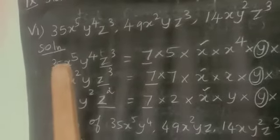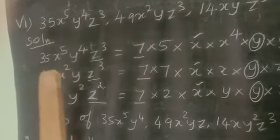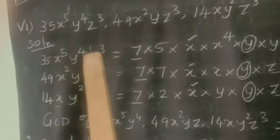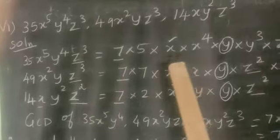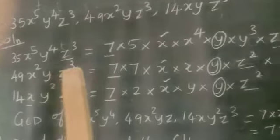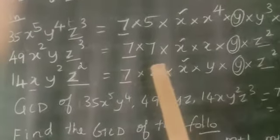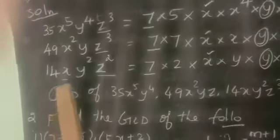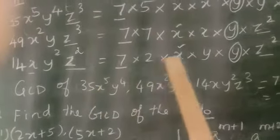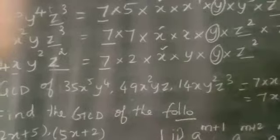So for 35, we find the factors in each term. 35x⁵y⁴z³ can be written as 7 × 5, x⁵ as x × x⁴, y⁴ as y × y³, z³ as z² × z. And 49x²yz³ can be written as 7 × 7, x × x, y, z² × z. Then 14xy²z² equals 7 × 2, x, y × y, z².